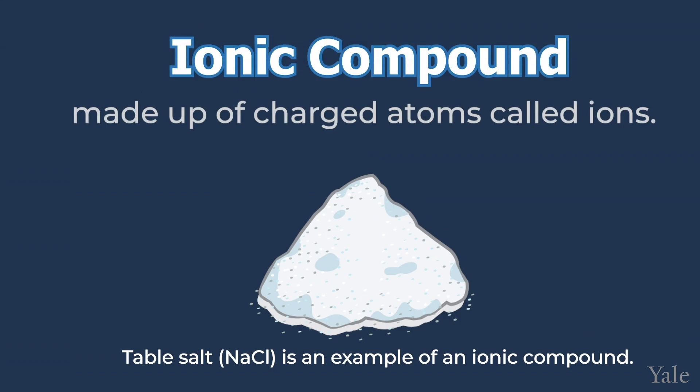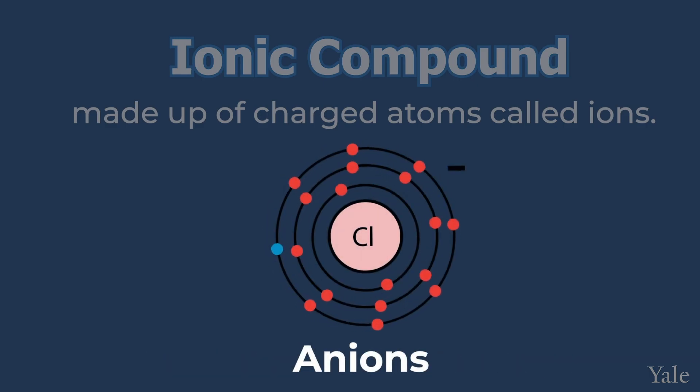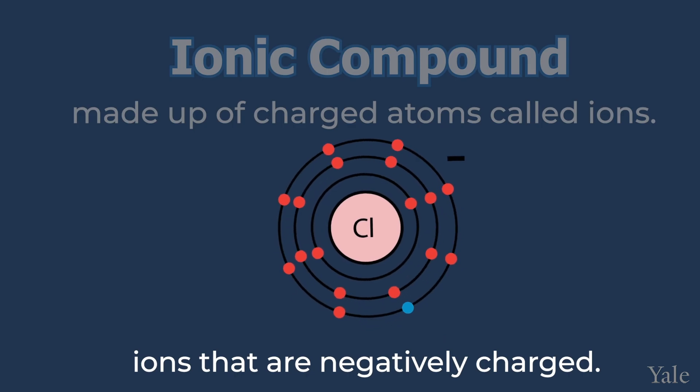Now, let's say you're drinking water, but someone accidentally adds salt to it. Salt is a fundamentally different compound to water. This is because salt, also known as NaCl or sodium chloride, is an ionic compound. It is made up of charged atoms called ions. Cations are ions that are positively charged, while anions are ions that are negatively charged. Like magnets, positively charged cations are electrically attracted to negatively charged anions.